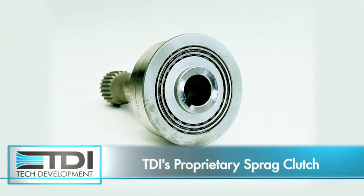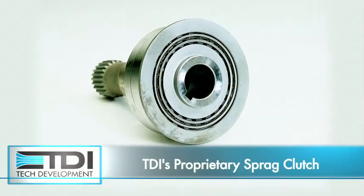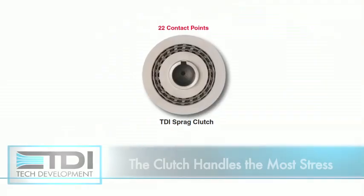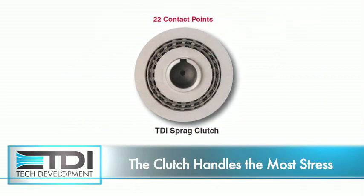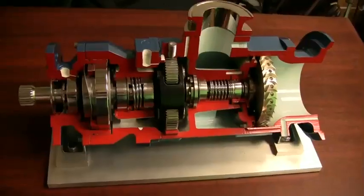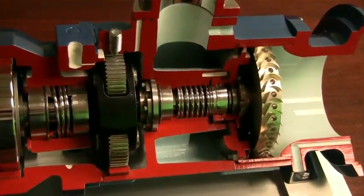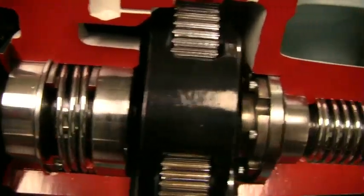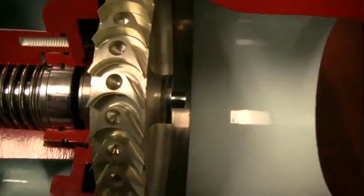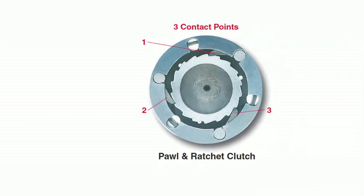TDI's proprietary Sprague clutch design is the industry's most reliable. The clutch is probably the most likely point of failure on any starter because it handles the most stress. TDI's Sprague clutch can handle the highest torque capacity per unit weight or size compared to traditional clutches offered on most air starters.